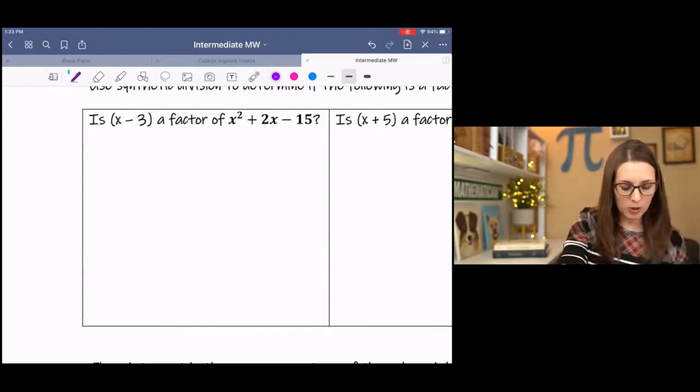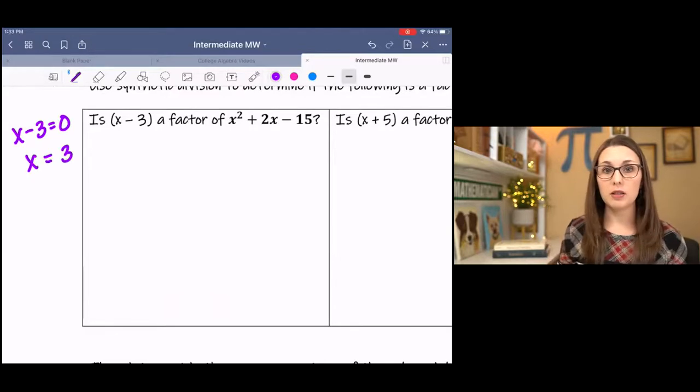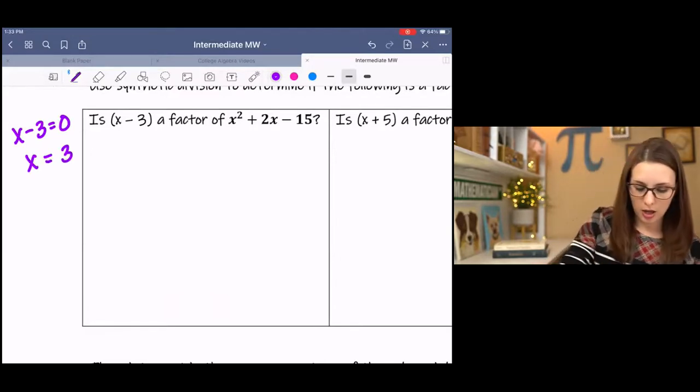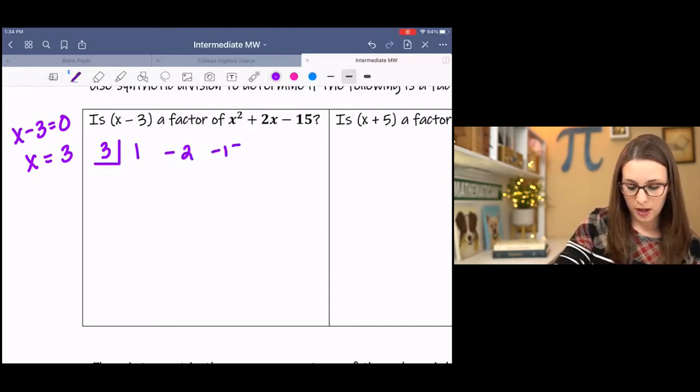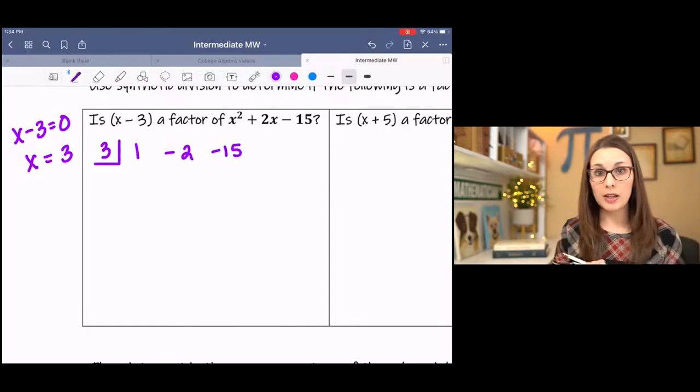For x minus 3 to be a factor, then that means that x has to equal 3. Add 3 to both sides. So I'm going to use that to set up my synthetic division. I've got 3 inside this little box. And then I have the coefficients of my polynomial written in descending order from the exponents. 1x squared plus 2x minus 15.